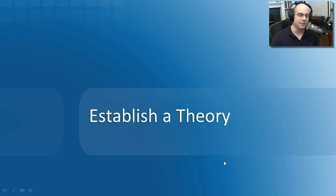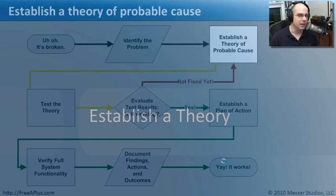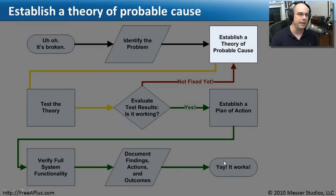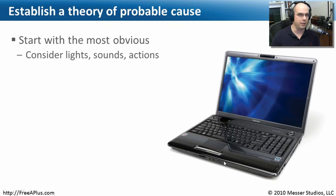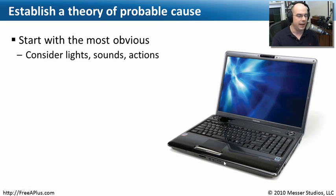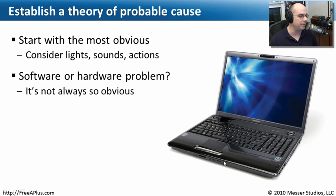Now that we've made a list of symptoms and asked the customer questions about what caused the problem, we need to establish a theory of what it might be. One of the best places to begin is with the most obvious. Are there any lights, noises, or error messages? If someone gets a message saying they're out of disk space, the most obvious cause is that they're low on disk space. Start with the obvious ones — check lights, error messages, and logs — things that really shine a light on exactly where the problem is occurring.